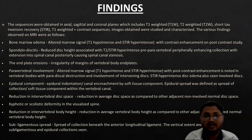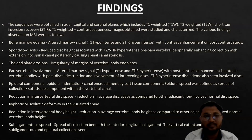The various MRI findings are as follows: bone marrow edema, spondylodiscitis, end-plate erosion, paravertebral involvement, epidural component, reduction in intervertebral disc space, kyphotic or scoliotic deformity, reduction in vertebral body height, and subligamentous spread.